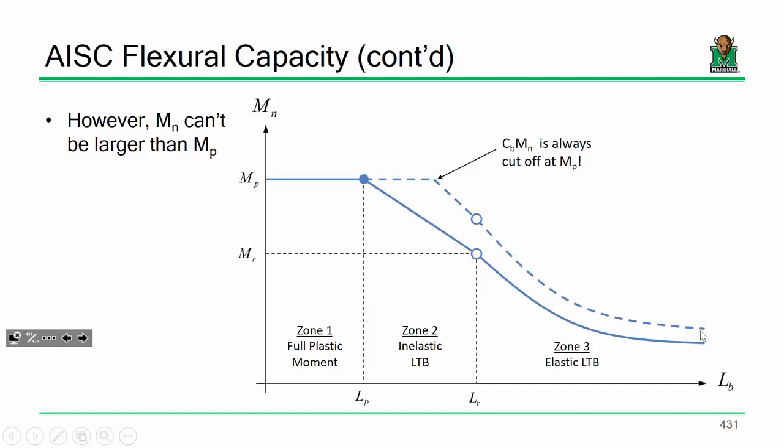When you look at the equation presented in zone three, there are always going to be a minimum of some computed value and M_P for this reason.